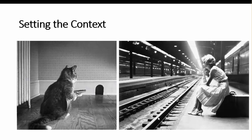Now let's look at another picture. This is Tom the cat — what is Tom doing? Tom is waiting for Jerry to come out so that he can shoot, and he's having a gun in his hand. Now if we look at both the pictures, both of them are waiting — they are waiting for some event to happen.